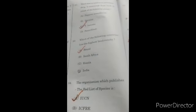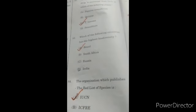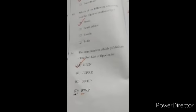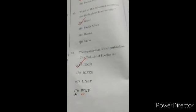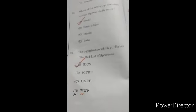Question 83: which of the following countries has the highest biodiversity? The highest biodiversity country is Brazil. Question 84: the organization which publishes the red list of species is A option, IUCN.